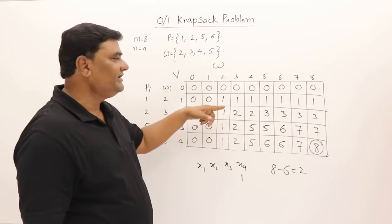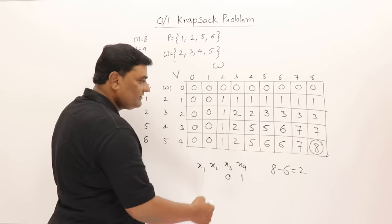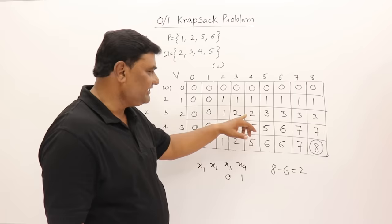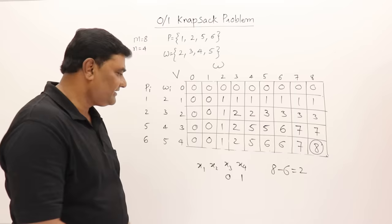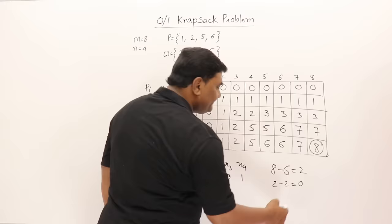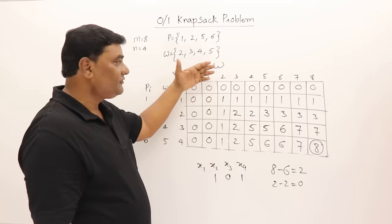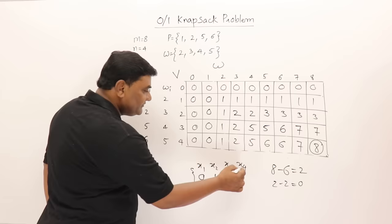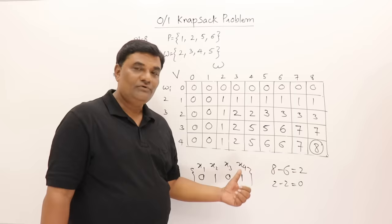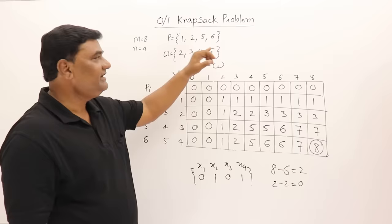Value 2 is in the third row, and 2 is also in the second row (previous row). So it is not because of the third object — don't include the third object. For the second object: 2 is in the second row but not in the first row. So this 2 is because of the second object — include it. Remaining: 2-2=0. Value 0 appears in both the first row and zeroth row, so first object is not included. Solution: x2=1, x4=1; maximum profit = 8.